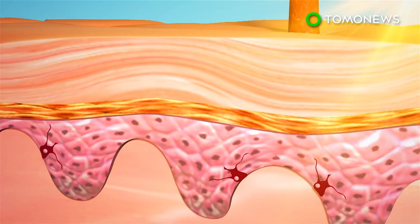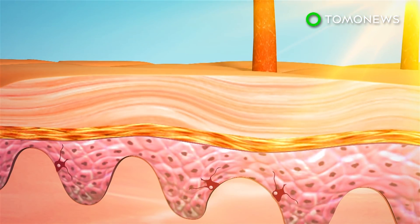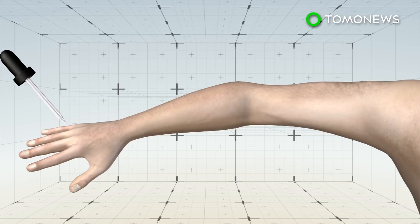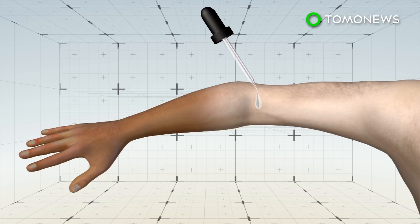Ultraviolet light causes the skin to tan by damaging it. This starts a chain of chemical reactions in the epidermis that eventually leads to the production of dark melanin, the body's natural sunblock. Researchers have developed a drug that, when applied to the skin, triggers the process of producing melanin without the need for UV light.